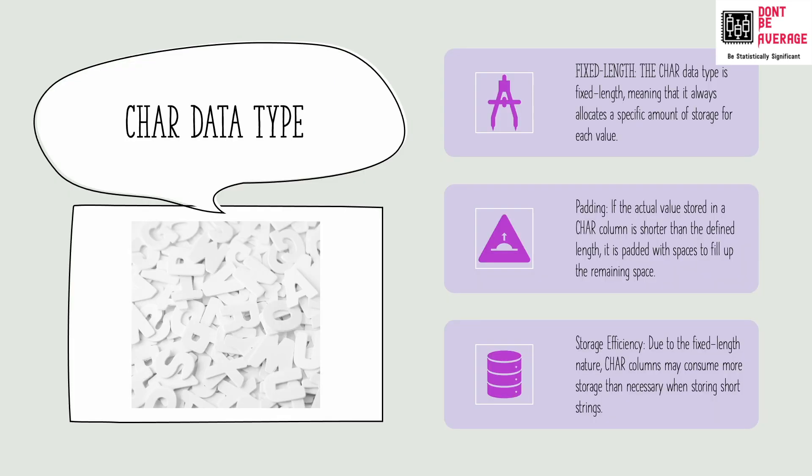First, let's talk about char. So char is for fixed length words. If you imagine a box that can only fit 10 letters, even if you put in a short word, it's going to add empty spaces to fill up those 10 letters. So it's a bit rigid. So that is exactly how char data type works.